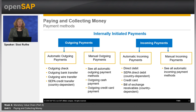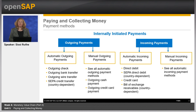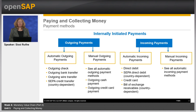Externally initiated payments will be shown in the next unit. One thing I want to mention is that in some cases the pre-configured payment methods are country dependent. For example, the payment method Bill of Exchange receivables is only available for France, Italy, and Spain, and not for Germany.